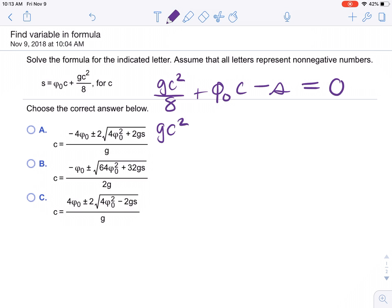Multiply by 8, so gc squared plus 8v sub 0 c minus 8s equals 0. Now we know a, b, and c, so we can do the quadratic formula. Remember, this is a right here, that would be g.